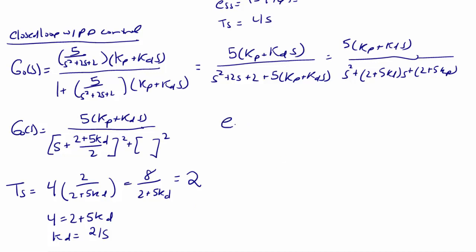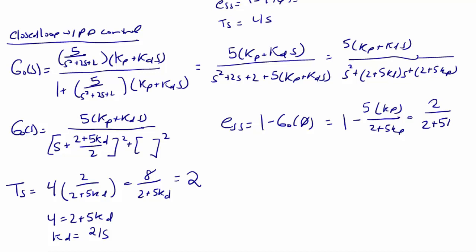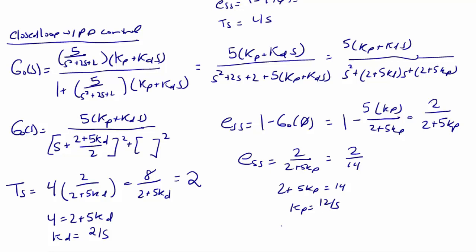Now let's find the steady state error. The steady state error equals 1 minus G0(0), or 1 minus 5KP over 2 plus 5KP, which simplifies to 2 over 2 plus 5KP. Improving the steady state error by a factor of two, we want ESS equals 2 over 14. Solving for KP, we get 2 plus 5KP equals 14, so KP equals 12 over 5. Finally, the controller we designed is GC(S) equals KP 12/5 plus KD times S 2/5 times S. This concludes today's lecture on feedback control.